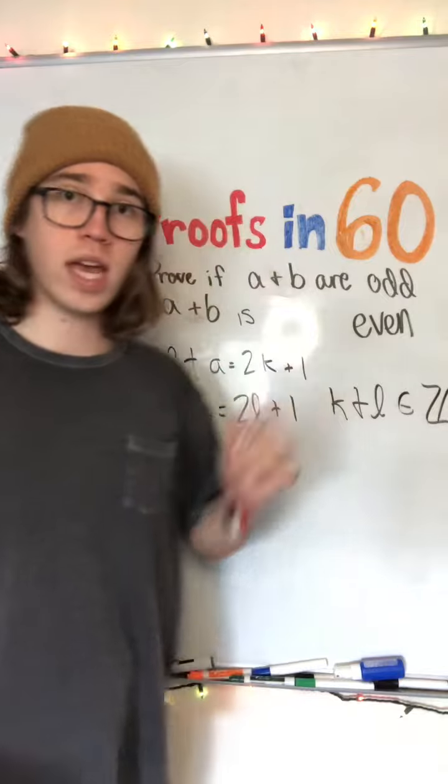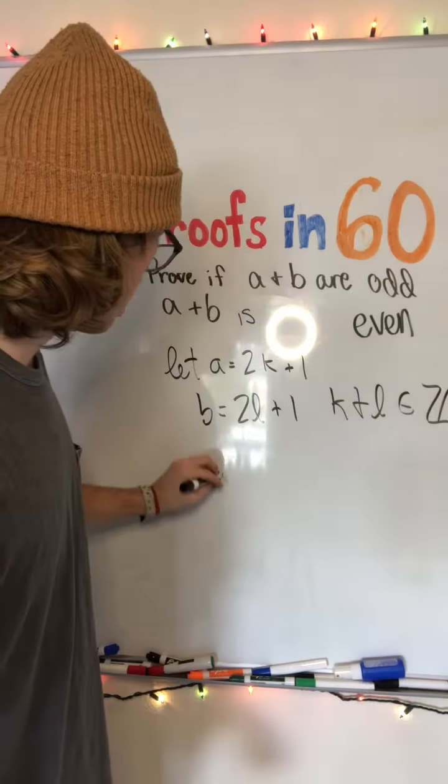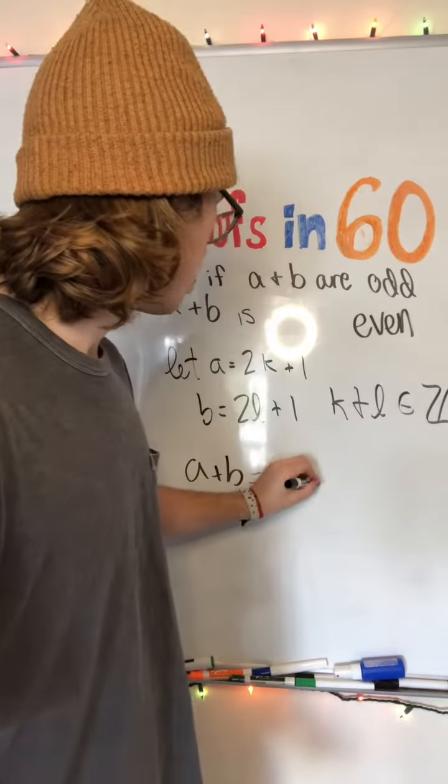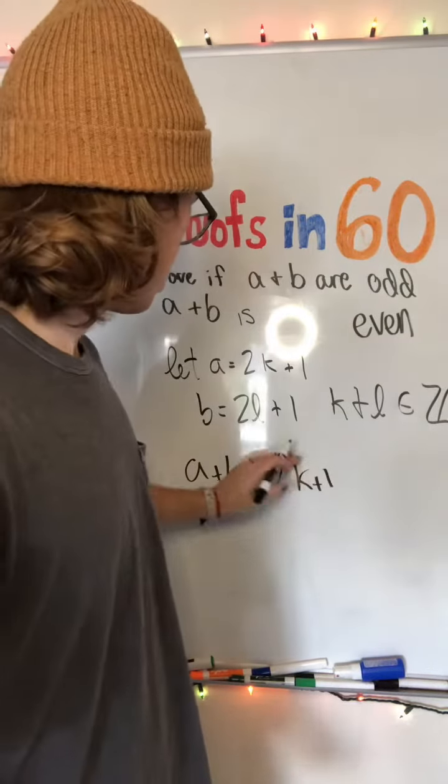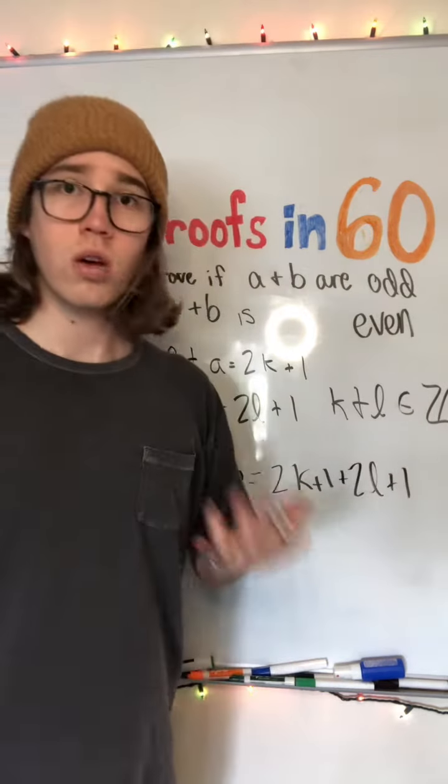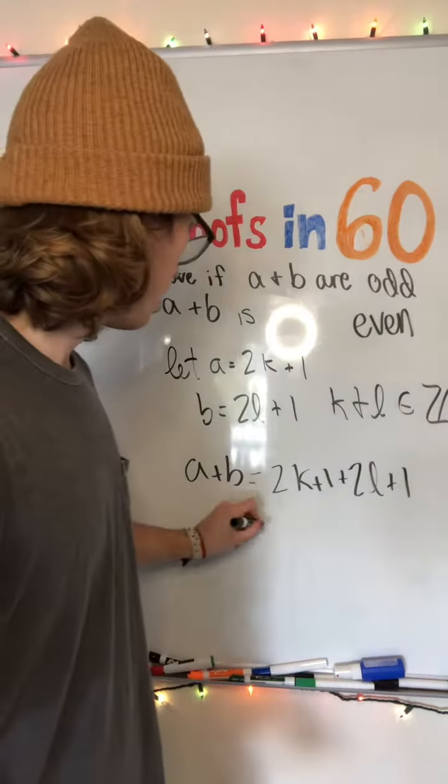Well, if we do A plus B, A plus B, this is equal to 2K plus 1 plus 2L plus 1, which is equal to 2K plus 2L plus 2.